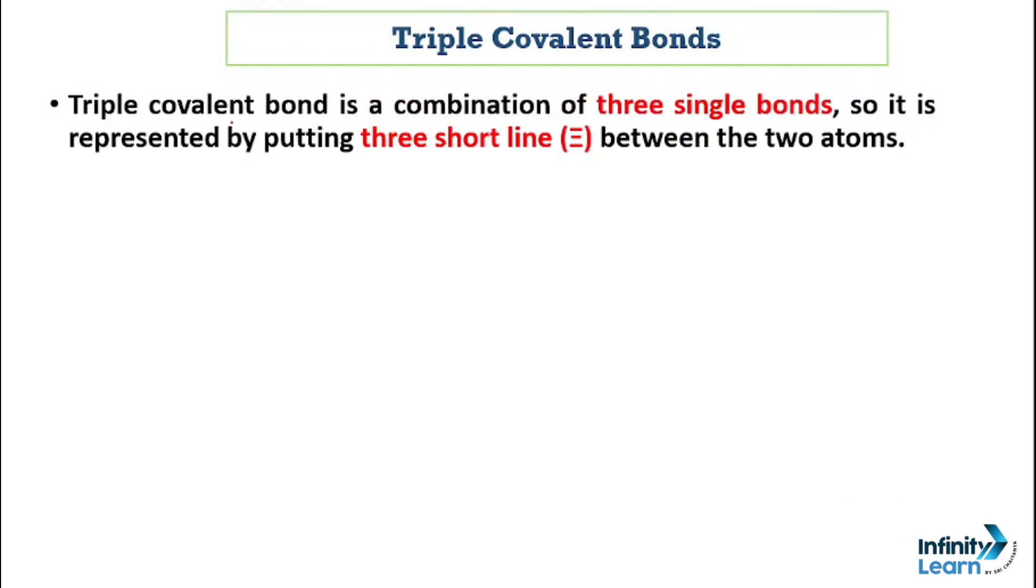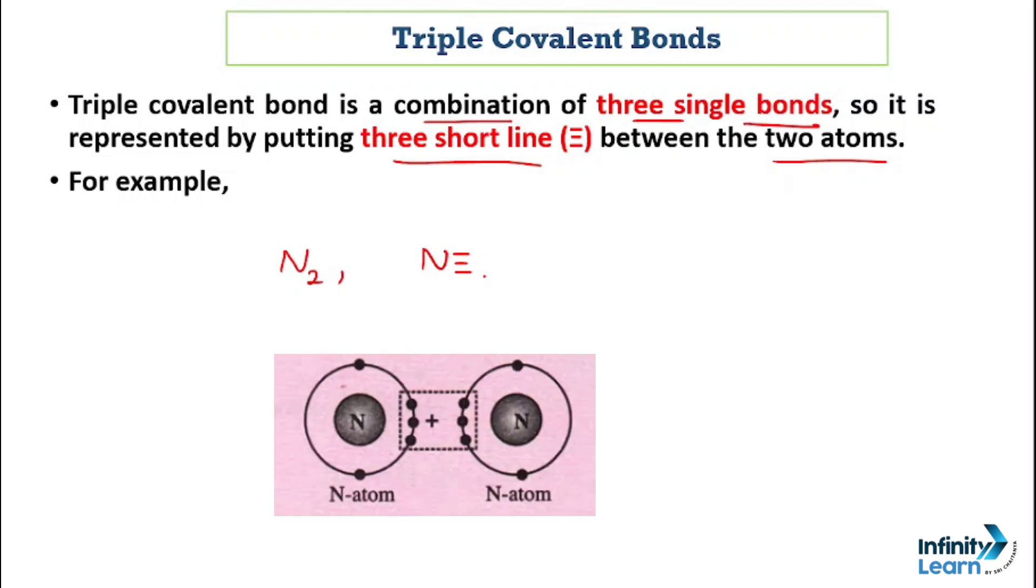Now let's talk about the third and last, triple covalent bond. Triple covalent bond is a combination of three single bonds, and it is represented with three short lines between the two atoms. If we take an example, the best one would be nitrogen, which is written as N2, in this way: N, then three short lines, then N. This is an example of triple covalent bond.